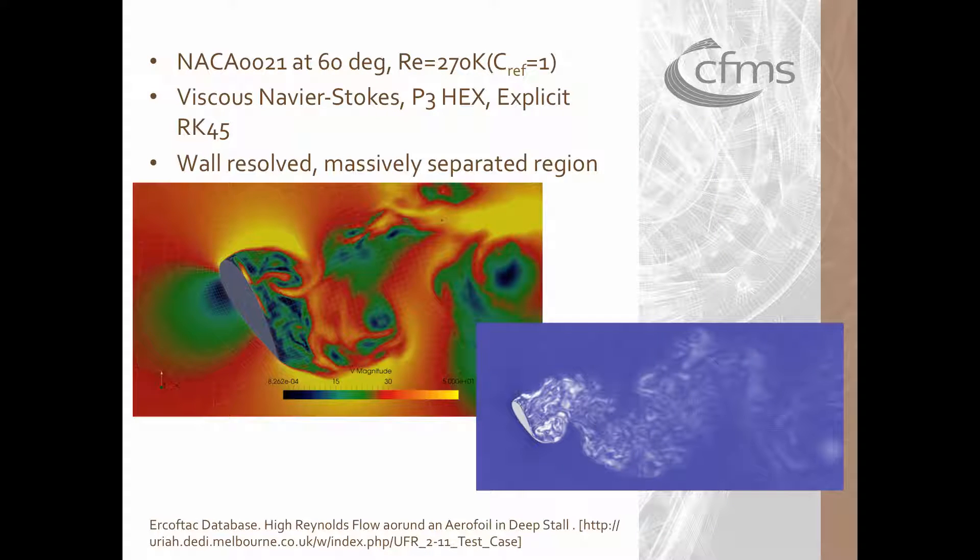Another challenging benchmark is the NACA 0021 at 60 degrees which can be found on the ERCOFTAC database. Existing studies prove that the current RANS models are unable to predict the shedding frequencies as well as the massively separated regions behind the wing. The viscous Navier-Stokes solver was employed using a P3 hex element which consisted of approximately 19 million degrees of freedom.